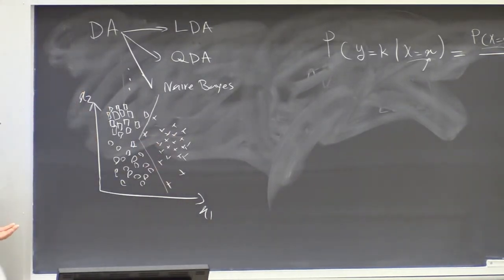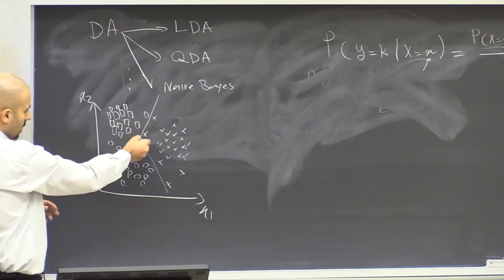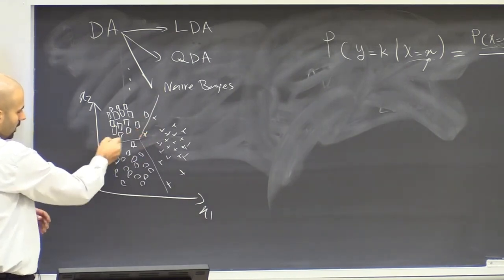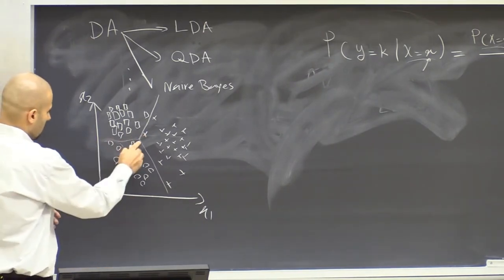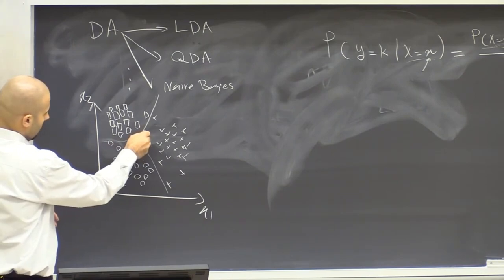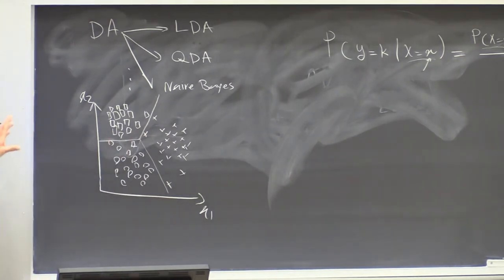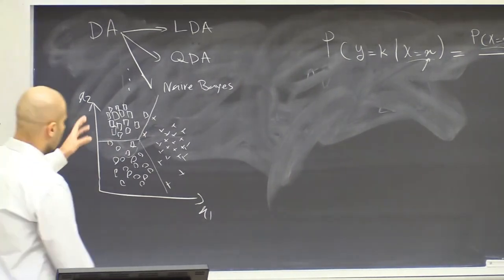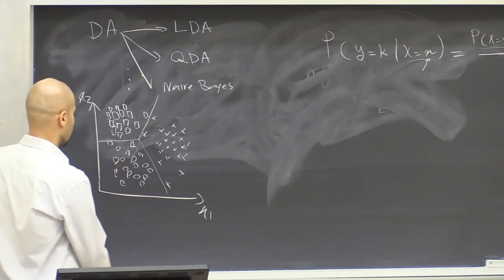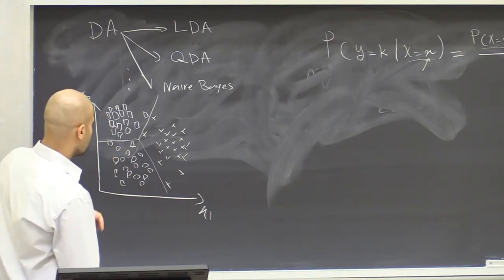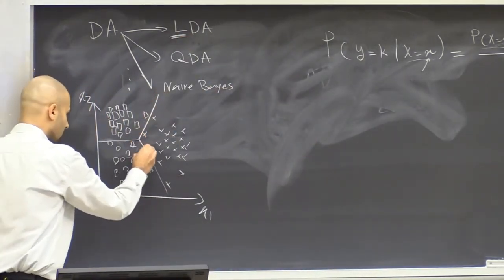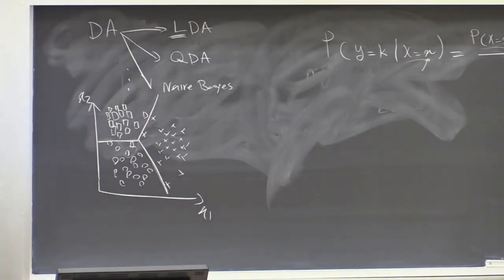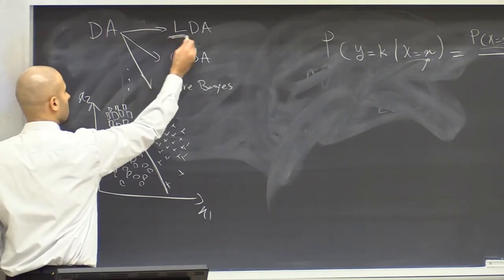These data points are not linearly separable. Adding a line anywhere leaves some points on the wrong side. The best linear boundary we can create still misclassifies some points. LDA, being linear, is only capable of finding line boundaries. Therefore, when data is nonlinearly separable, LDA accuracy cannot reach 100%.